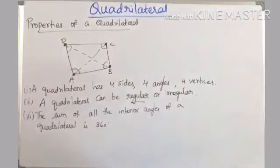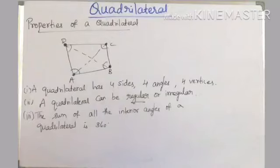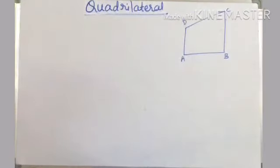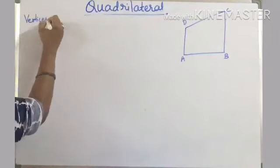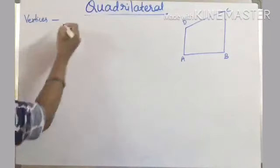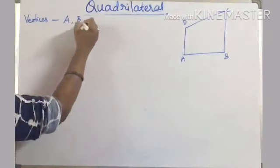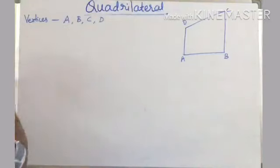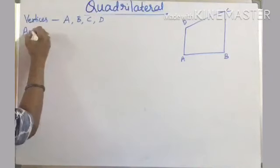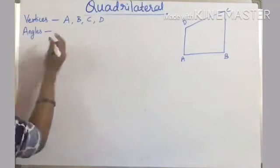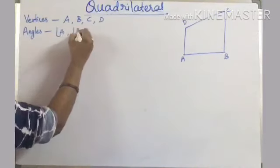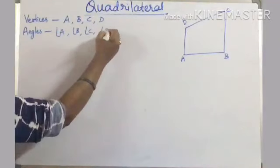Now I am going to show what are sides, angles, and vertices in a quadrilateral. Consider quadrilateral ABCD. Vertices are nothing but corners — A, B, C, D are the vertices. Coming to angles: angles can be written with a single letter or three letters. So, angle A, angle B, angle C, angle D.